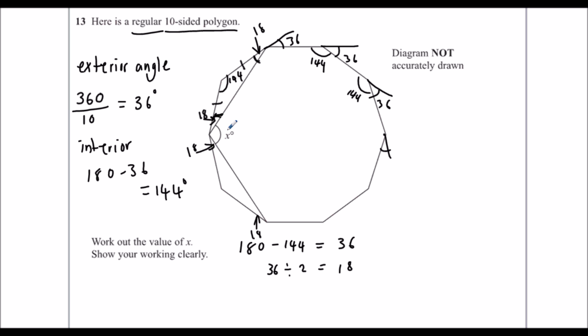And now we can look at this big angle here. The whole thing is one of these interior angles, so 144. And then we've got to take away two 18s. So 144, take away 18, take away 18. Again, you can use the calculator. It's a calculator paper. That leaves us with 108 degrees. So x is 108 degrees.